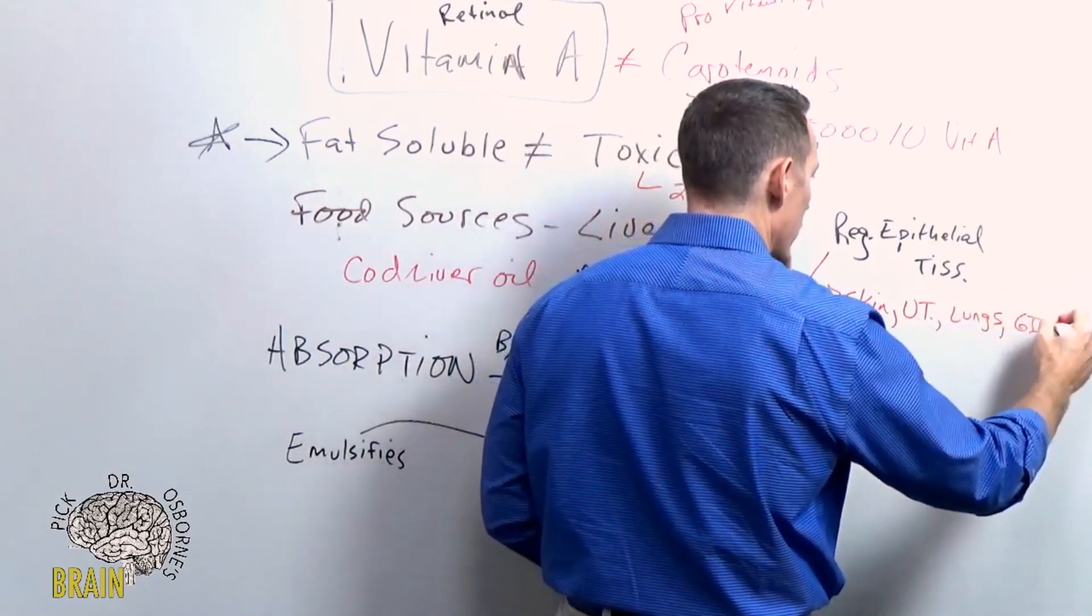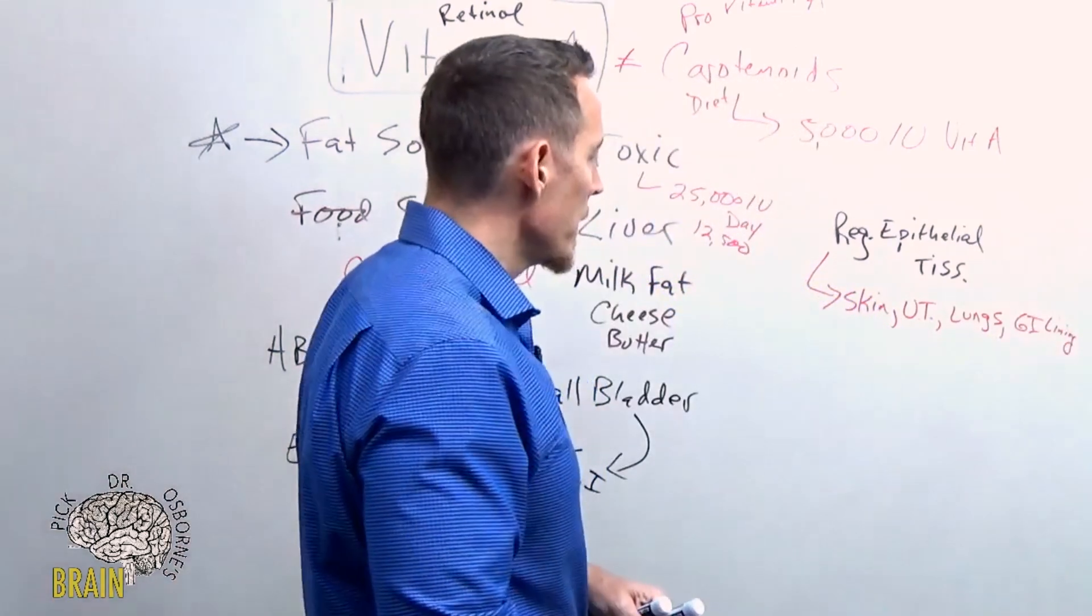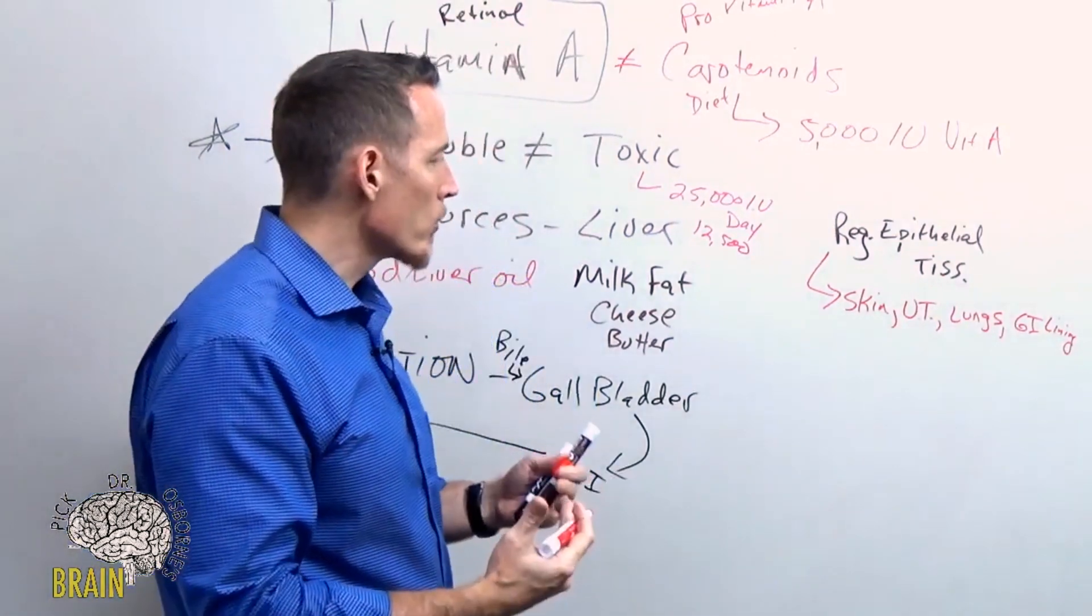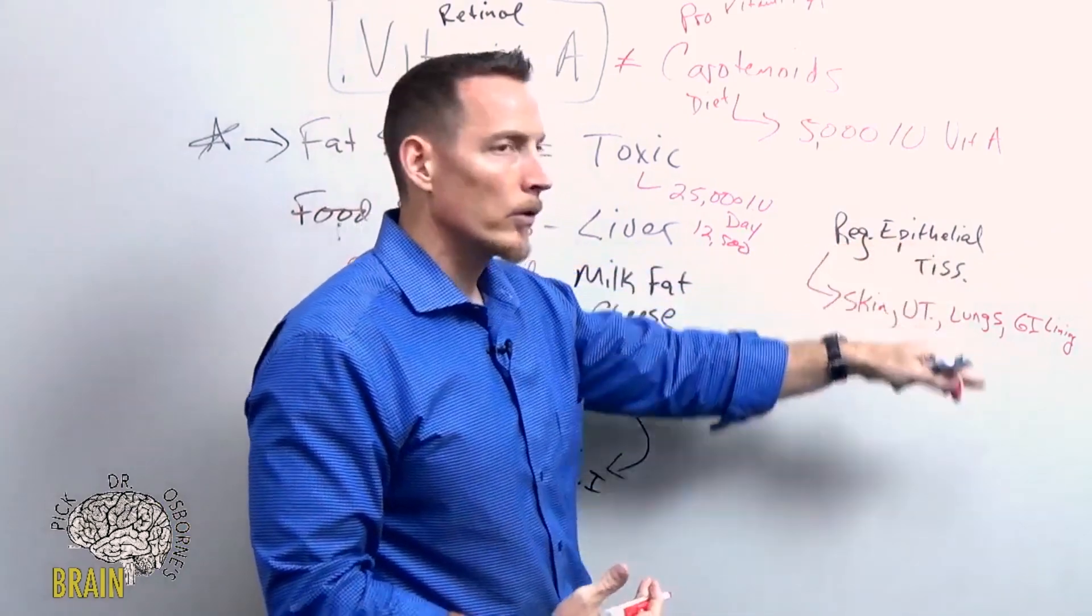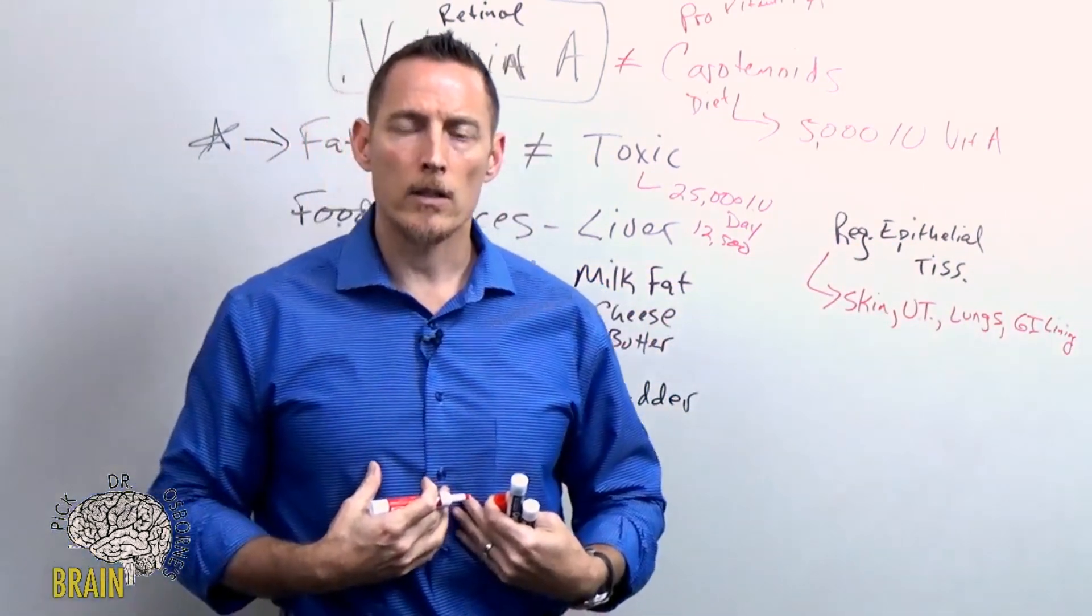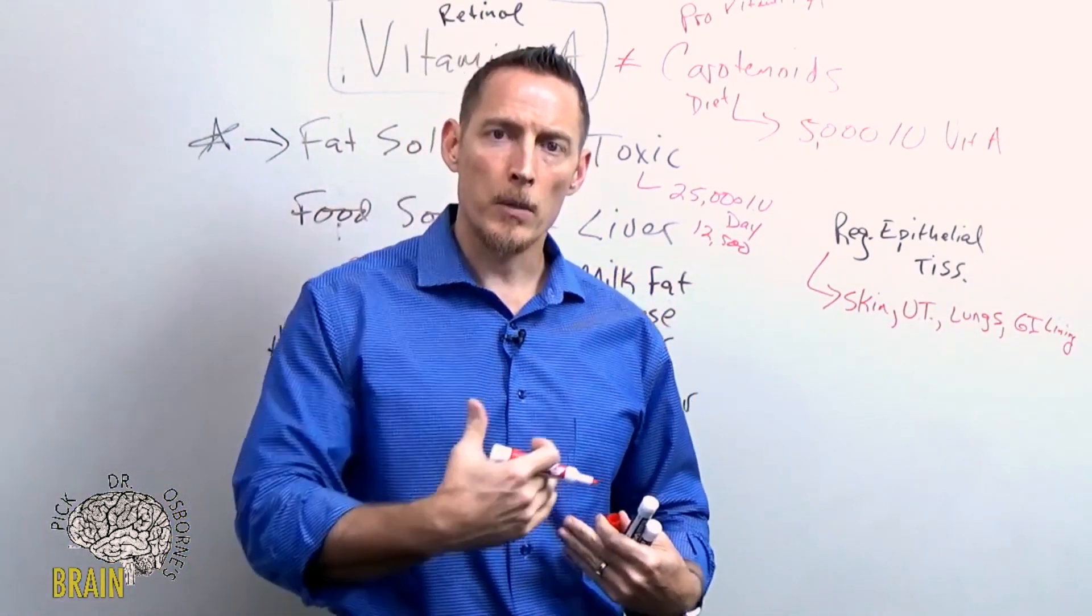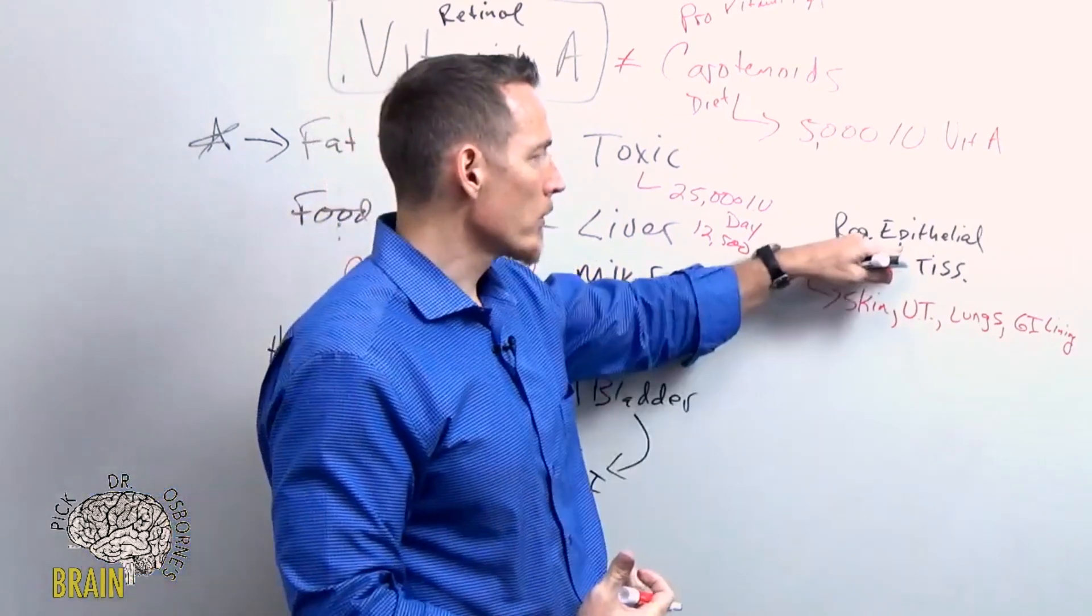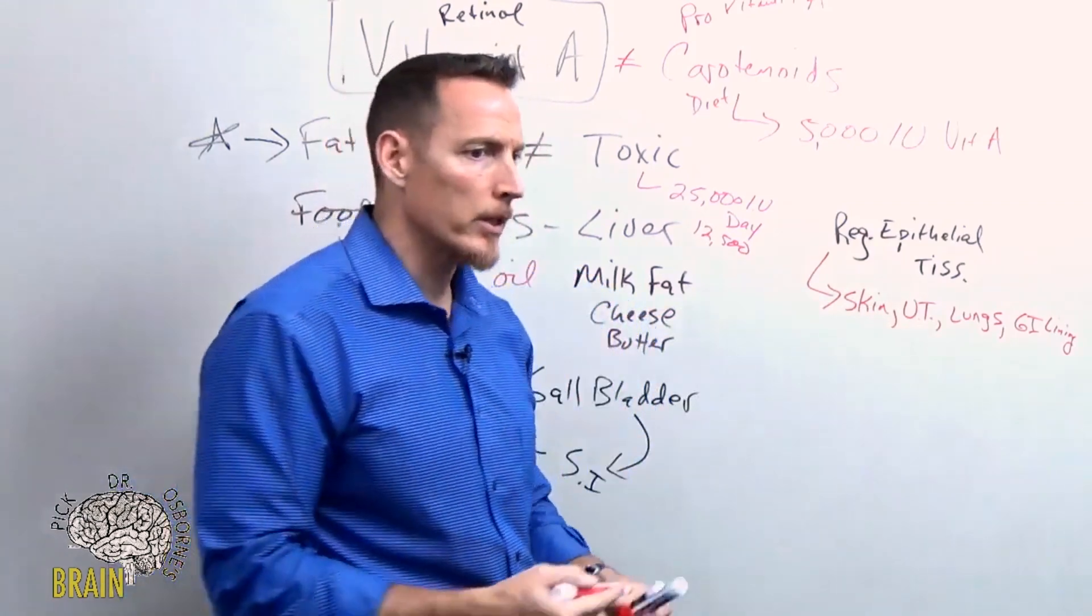You hear all these people talking about glutamine and leaky gut. Very rarely do you hear anybody mention vitamin A, but vitamin A is one of the most crucial nutrients for regenerating epithelial tissue. So let's say you've got a disease of inflammation in your GI tract, in your small or large intestine. In order for that tissue - first you got to put the fire out, but then that tissue has to be regenerated. In order for that tissue to regenerate, that requires vitamin A. Without vitamin A, you're going to have a really hard time to do that.